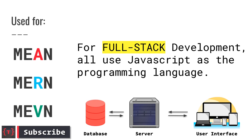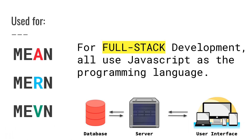Basically, MEAN, MERN, and MEV are used for full stack development and they all use JavaScript as a programming language. A full stack application comprises of the front end and the back end. Inside the back end, you have a database where you keep your data, and then you have a server which communicates with that database to get the data.